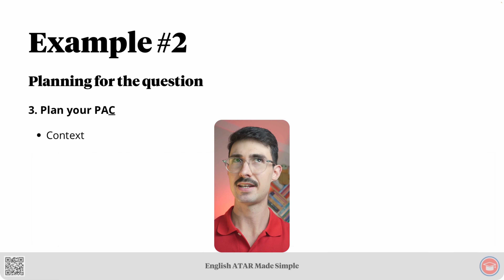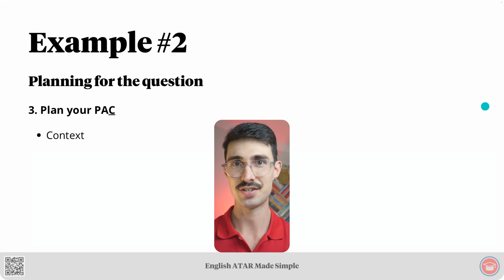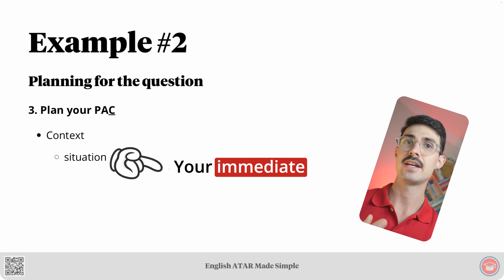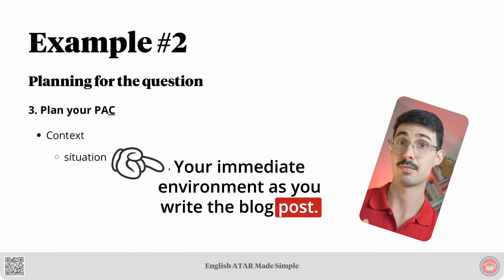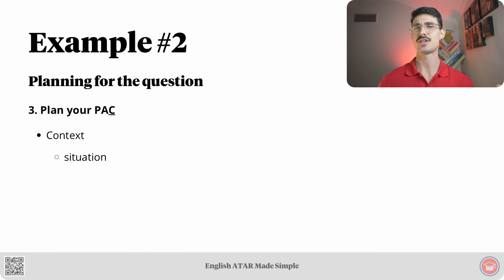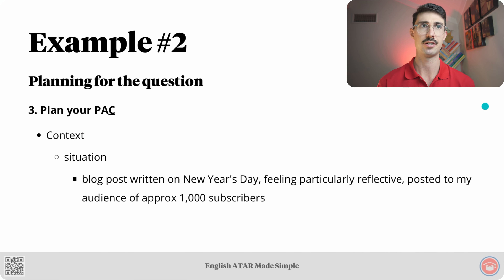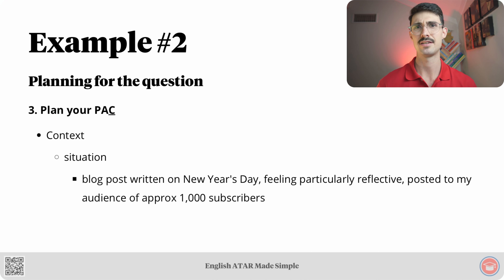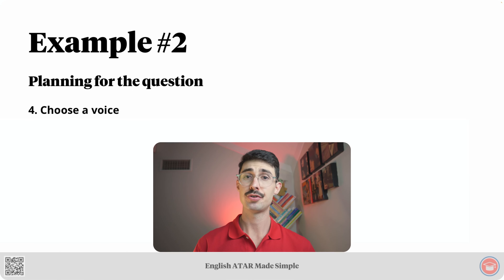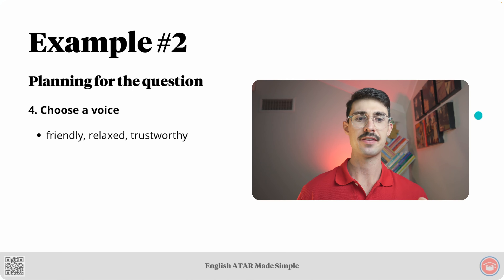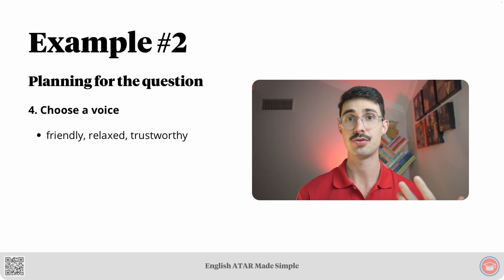The final part of this step is to plan the situational context — what is your immediate environment as you write the blog post? For this question, I'm assuming the blog post was written on New Year's Day, where I am feeling particularly reflective, and I've posted this to my audience of approximately 1,000 subscribers. Step four: choose a voice. I will be portraying a friendly, relaxed, and trustworthy personality to my audience.